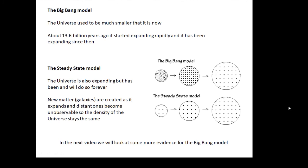There is another model—there's the Big Bang model, which says that the universe used to be much much smaller. It all started from nothing and it's expanding rapidly, and all these galaxies are moving further apart. There is another model called the Steady State model. In the Steady State model, the universe is also expanding, but it has always been expanding and it will do so forever.